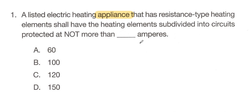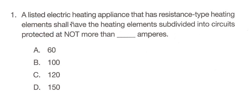This question specifically states "appliance," and that's really important here. Electric heating equipment is a completely different article. So that's a big one and an important one to know. Next, it's going to have resistance type heating elements, giving us a little more detail about this appliance, and it's likely going to lead to a subsection within an article.